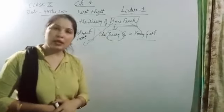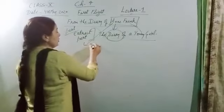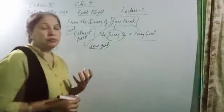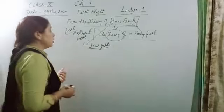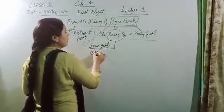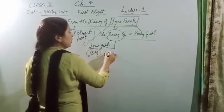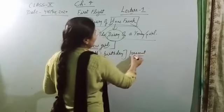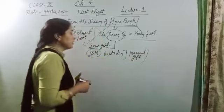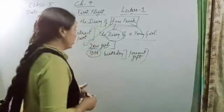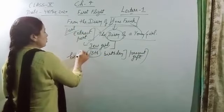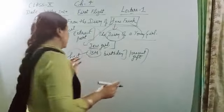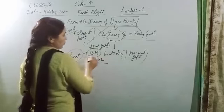Anne Frank also did the same thing. She was a Jewish girl and she had a diary. She started to write the diary, and she got the diary at her thirteenth birthday. Her father gave it as a present, a gift. Later she decided to write down things because she was not having any best friend - that's why she decided to write the diary.